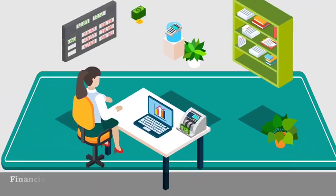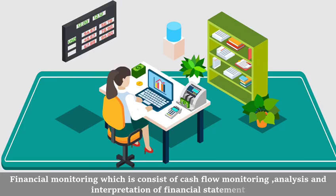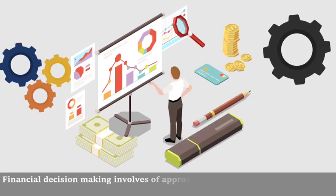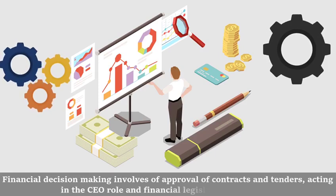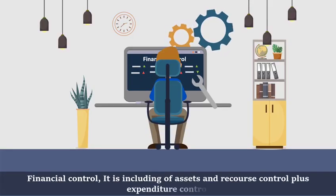Financial monitoring consists of cash flow monitoring, analysis, and interpretation of financial statements. Financial decision-making involves approval of contracts and tenders, acting in the chief executive officer role and financial legislative framework. Finally, financial control includes assets and resource control plus expenditure control.